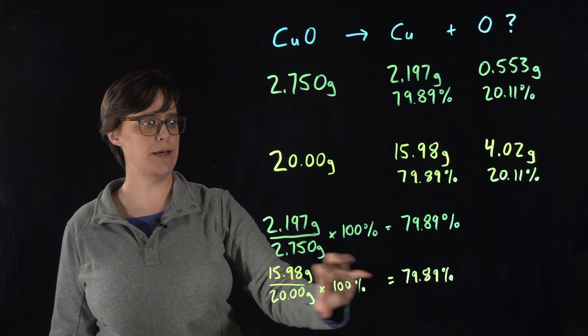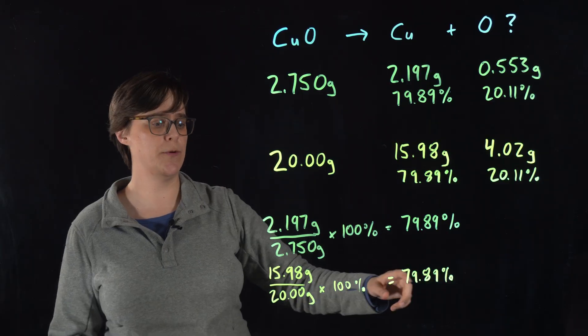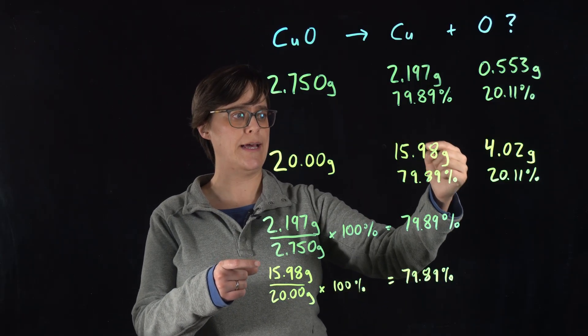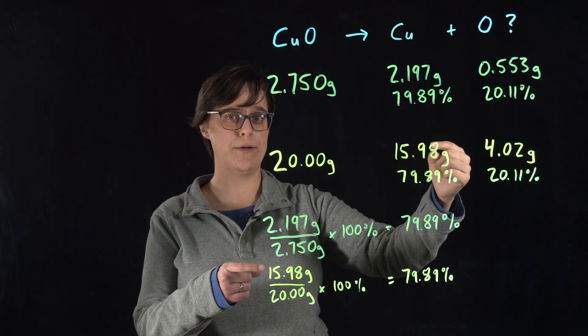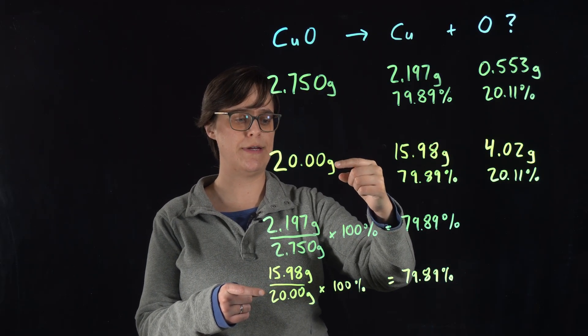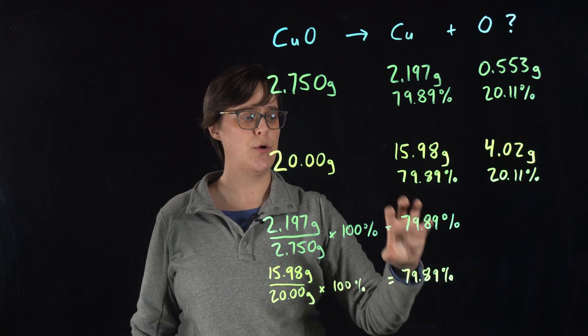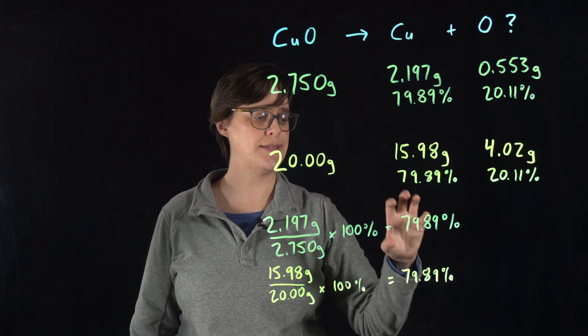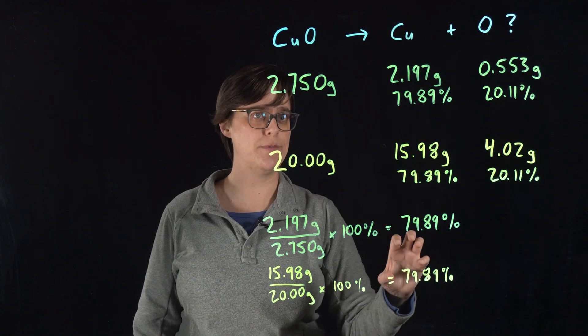Now, same calculation with our second sample. We found that we had 15.98 grams of pure copper, divide it by our original 20.00 grams, multiply it by 100. We have that same percent by mass, 79.89 percent.